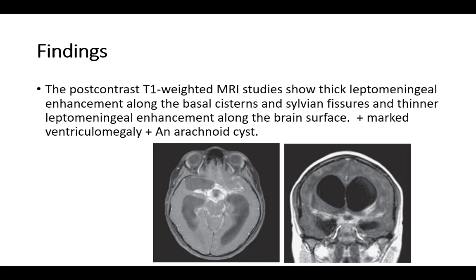In these images we can see thick leptomeningeal enhancement along the basal cisterns and sylvian fissures, with also thin leptomeningeal enhancement along the outer brain surfaces. Also noted is marked ventriculomegaly with an incidental arachnoid cyst in the anterior right temporal lobe.